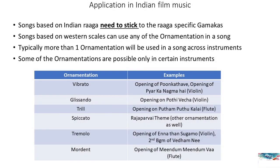Finally, let us take a look at how these are applied in the Indian film music context. All the compositions which are based on Indian classical ragas stick to the raga-specific Gamakas. Otherwise, we have seen composers use multiple ornamentations in a song. I have illustrated below some samples — please listen to these songs. You will then register these ornamentations and identify them in other songs.